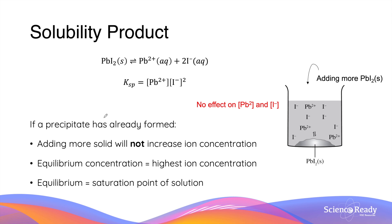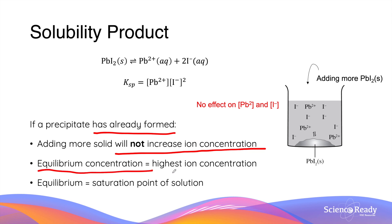What's interesting about a dissolution reaction compared to previously discussed equilibrium systems is that the amount of solid does not disturb a reaction at equilibrium. In other words, when precipitate has already formed, any more solids will not increase the amount of ions dissolved, so the concentrations of ions are unchanged. The most important implication is that equilibrium concentrations of ions are the highest they can be. Therefore, when a dissolution reaction reaches equilibrium, it also reaches what's known as a saturated state, where no more ions can be dissolved. The solubility product constant Ksp provides us the highest concentration of ions possible for a given ionic compound.